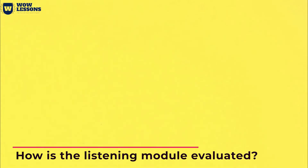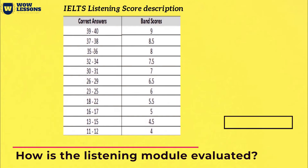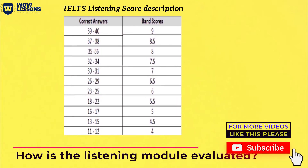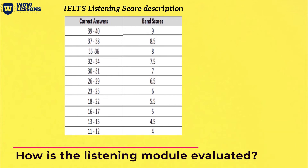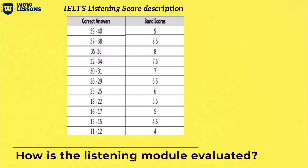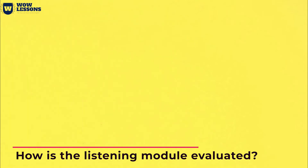How is the listening module evaluated? In the listening section, you will need to answer 40 questions. Each correct answer will qualify for one point. You don't lose points for incorrect answers. Thus, you can get 40 points, which are then converted into a total score for the listening section. You can find more information on the conversion of points on the official IELTS website. Use this table when performing the IELTS listening test band analysis to check where you stand. However, it is worth noting that the version of the real IELTS listening test may differ slightly, so scores can be evaluated differently.